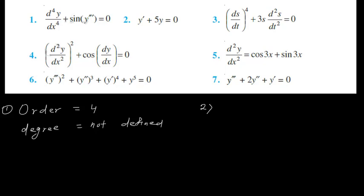Question 2: y′ + 5y = 0, where y′ means dy/dx. Order is 1. The highest power of y′ is 1, so degree is 1. Order 1, degree 1.